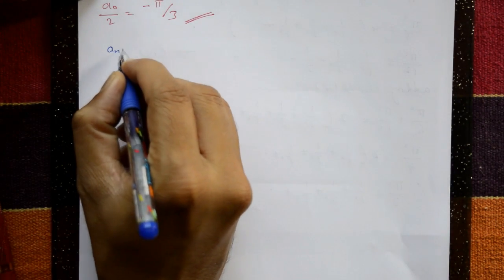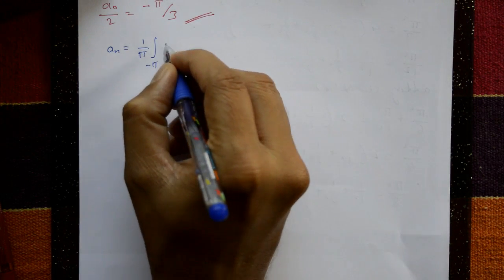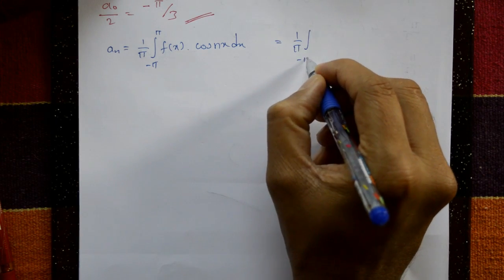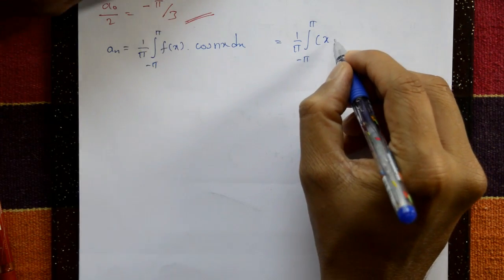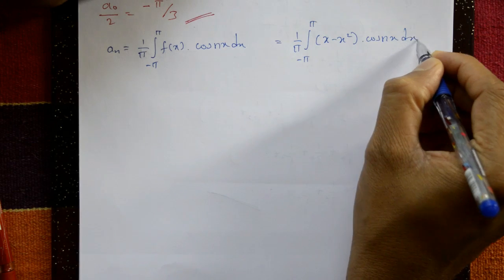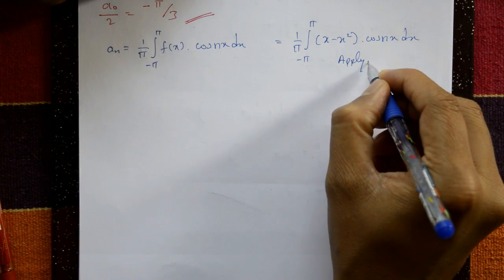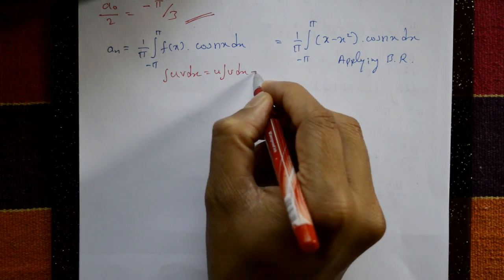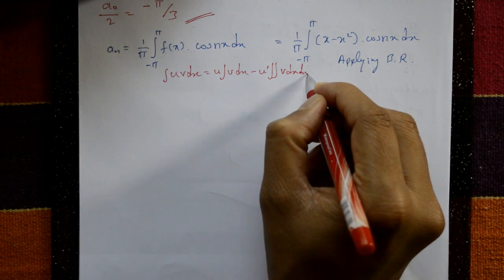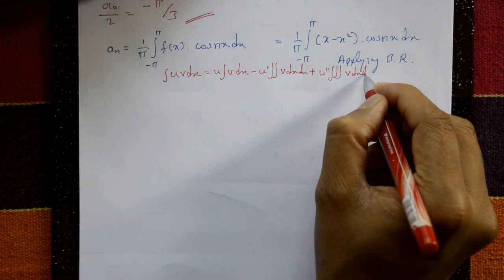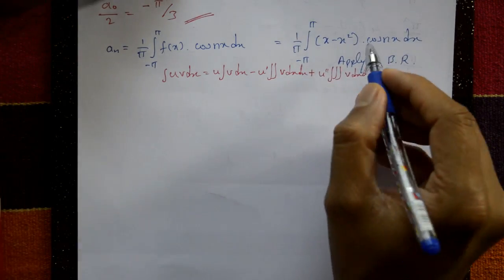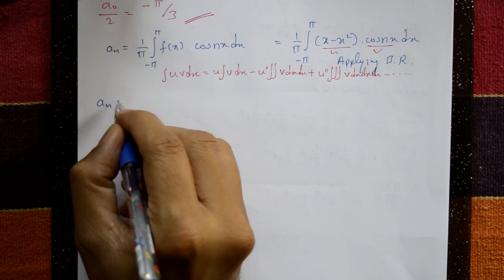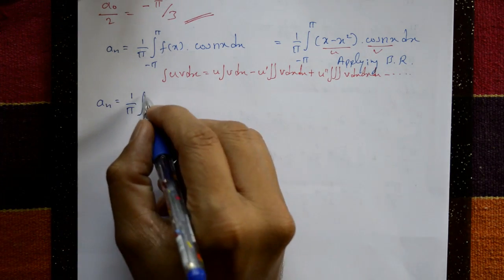aₙ is equal to (1/π) times the integral from -π to +π of f(x)·cos(nx) dx. That is (1/π) times the integral from -π to +π of (x - x²)·cos(nx) dx. Now applying Bernoulli's rule: u is the polynomial (x - x²) and v is the trigonometric function cos(nx).